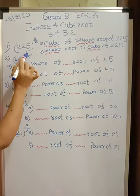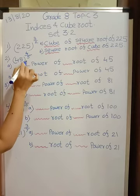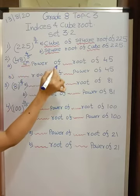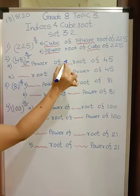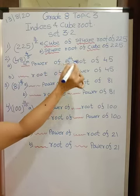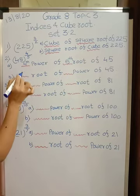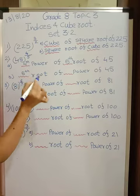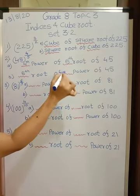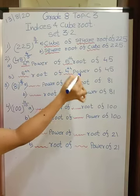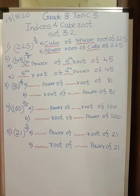Now what is the power? It is 4. So I will write fourth power of which is the root? Fifth root. So fifth root of 45. Now I want to take root first. So it will be fifth root of what is the power? Four. So it is fourth power of 45. That easy it is.